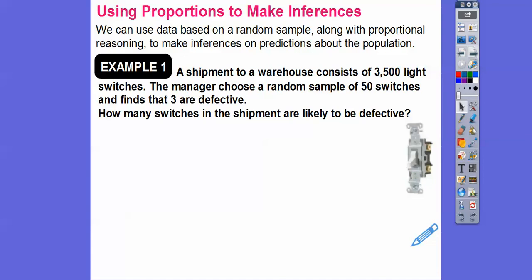We're going to use proportions to make some inferences. Proportions are a fraction equals a fraction — when a fraction equals a fraction, we make them equal to each other and that helps us make decisions. A shipment to a warehouse consists of 3,500 light switches. The manager randomly chooses a sample of 50 switches and finds that three are defective. It has to be random — if he just picked ones from the top or bottom, they might have been damaged in shipping. So how many switches in the shipment are likely to be defective?